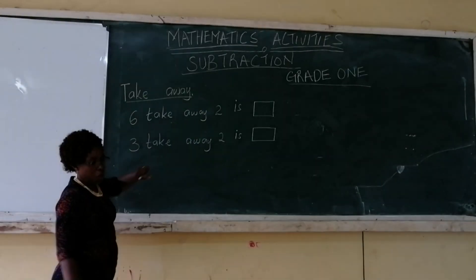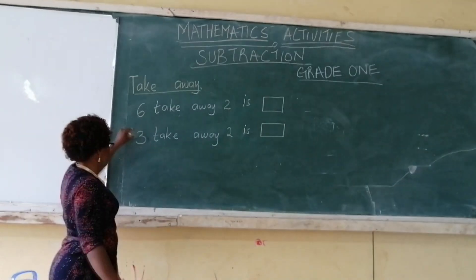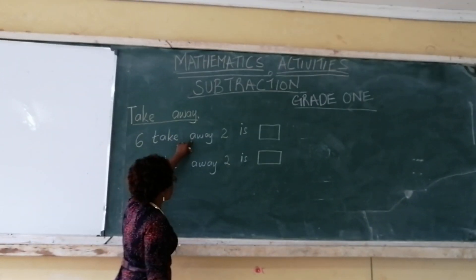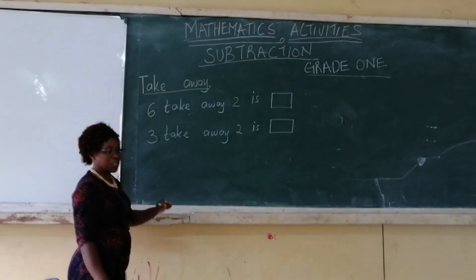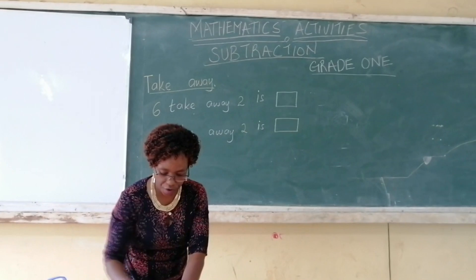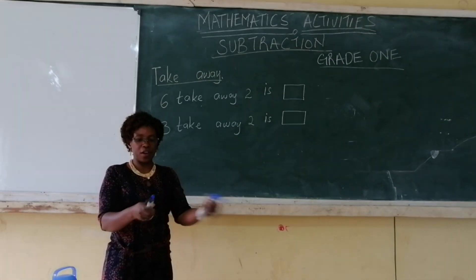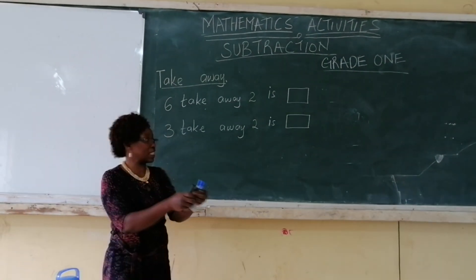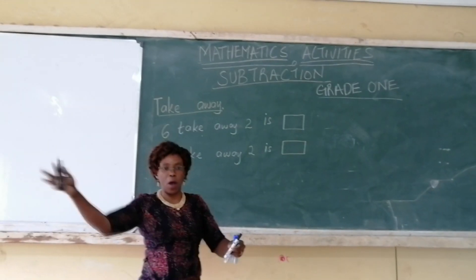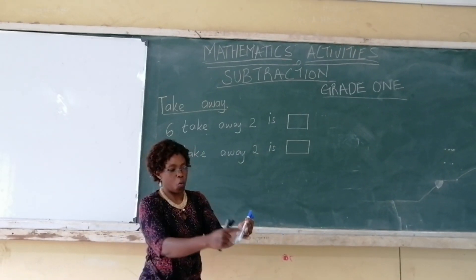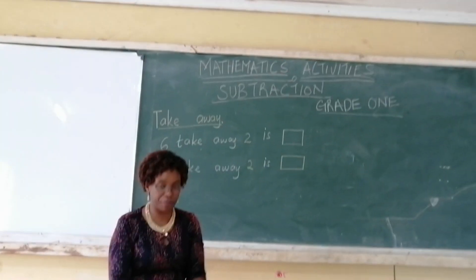Now, you can also be given a question. If you look at the assignments, there are questions where they have not drawn for you. So, if they have written for you: six, take away two, is... you can use items, you can count items. For example, I have six pens: one, two, three, four, five, six. Then, I am supposed to take away two. So, I have taken away one, two. How many am I left with? One, two, three, four. So, my answer is four, because I have been left with four.